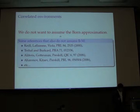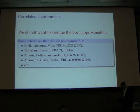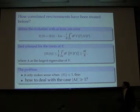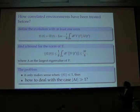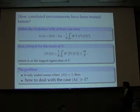We don't want to use the Born approximation. This was done before in a series of papers. What you need to do is define the evolution with one error: you take the evolution operator, take the identity out, and find a bound to the norm. This is related to the probability of having one error in the evolution of the computer, where you take the average over the largest eigenstate of the interacting Hamiltonian. This only makes sense if the error probability is very small, as Professor Gottesman told us yesterday.